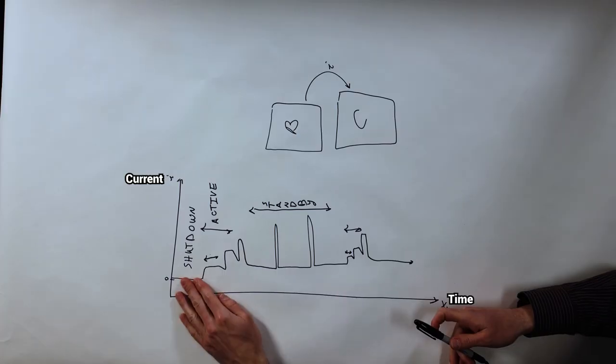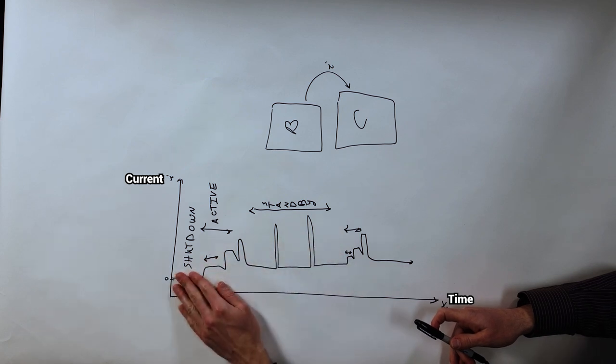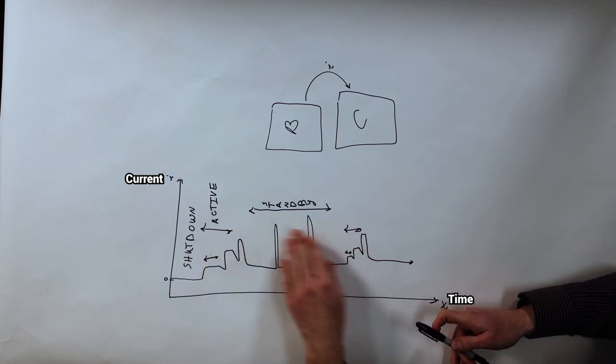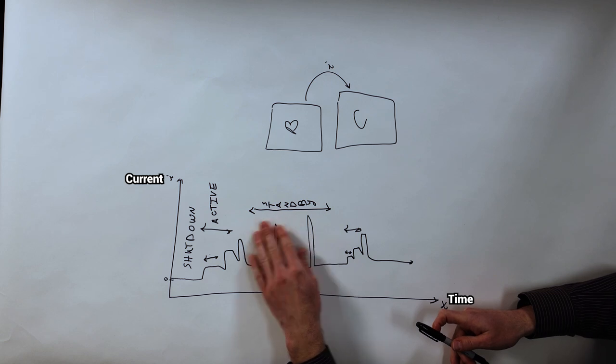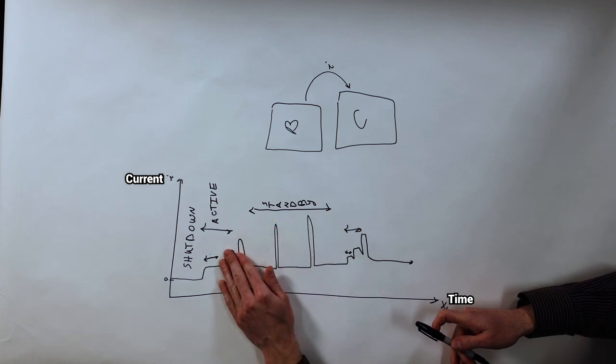And speaking of, just for scale, can you give us a rough idea of numbers between the different modes? Very good question. So shutdown is going to be in the hundreds of nanoamps, like 100 to 200 nanoamps. Standby is going to be around 10x shutdown, so around a microamp. Okay. And then active modes is going to be around 1000x of standby, so in the milliamps. Wow. Okay. So it is very important how much time you spend in the modes. Correct. Okay.